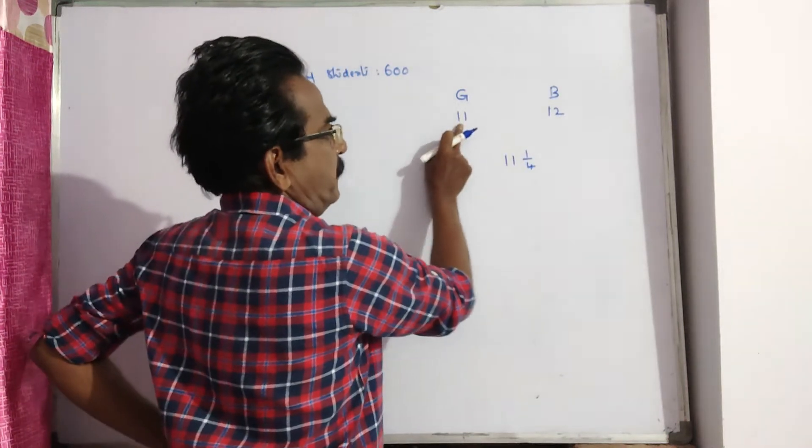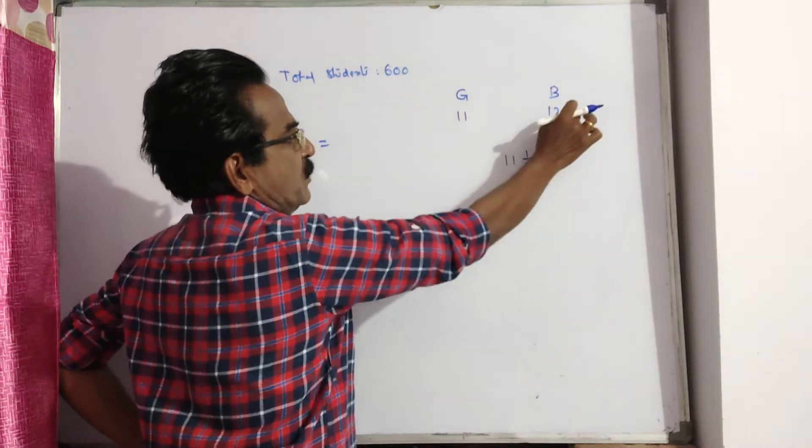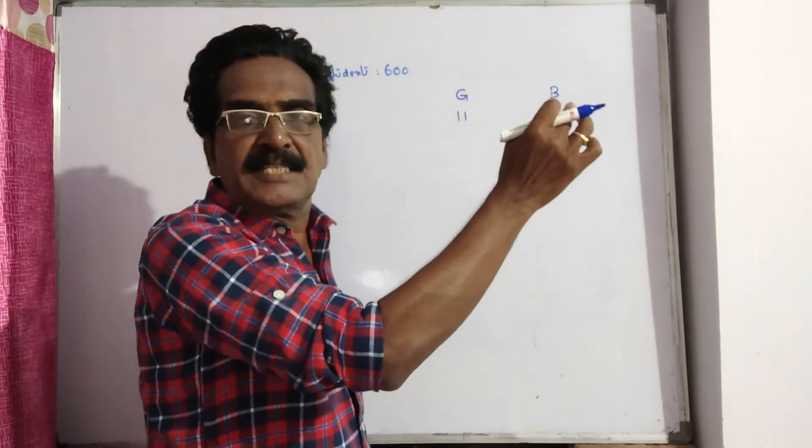See friends, this is cheaper, this is mean. Girls by boys is equal. This is the rule of allegation, friends.